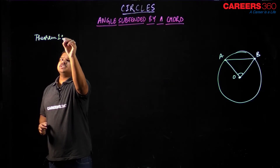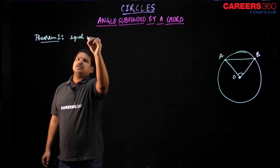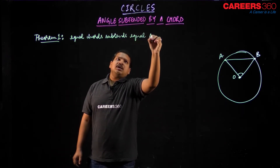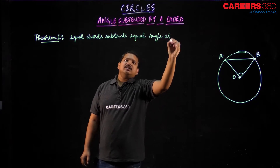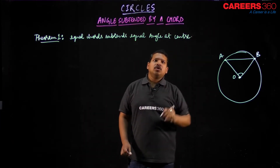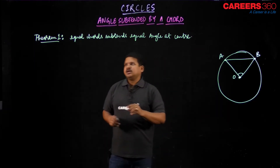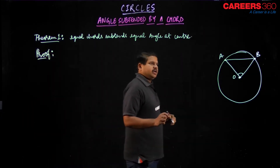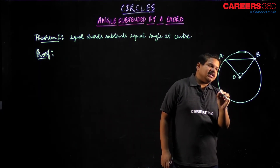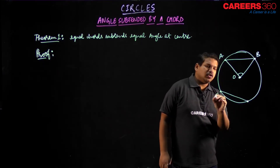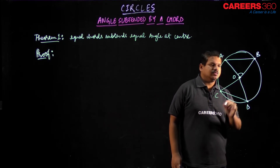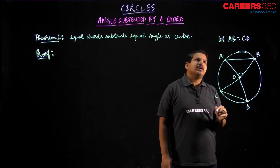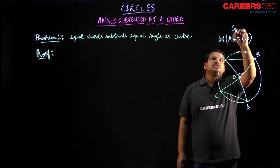Theorem number 1 says: equal chords subtend equal angles at center. Let us quickly have a look at the proof of this one. So what this theorem is trying to say — we have chord AB and let us draw one more chord CD. Now if I join these two, I am assuming that AB is equal to CD — this is given to me.